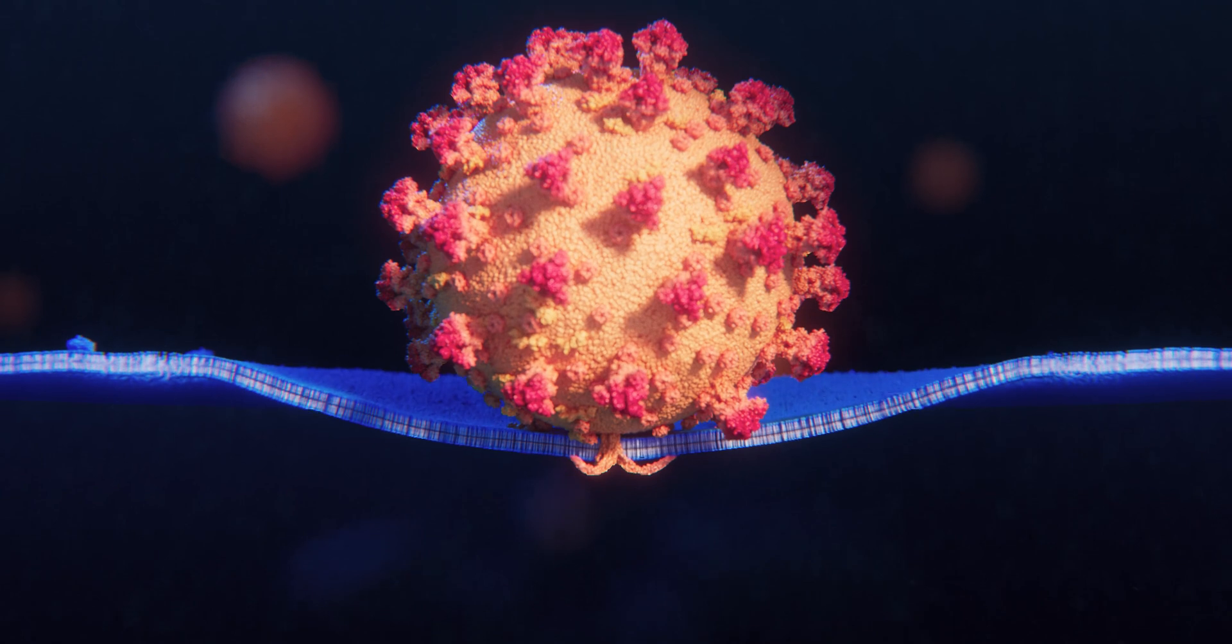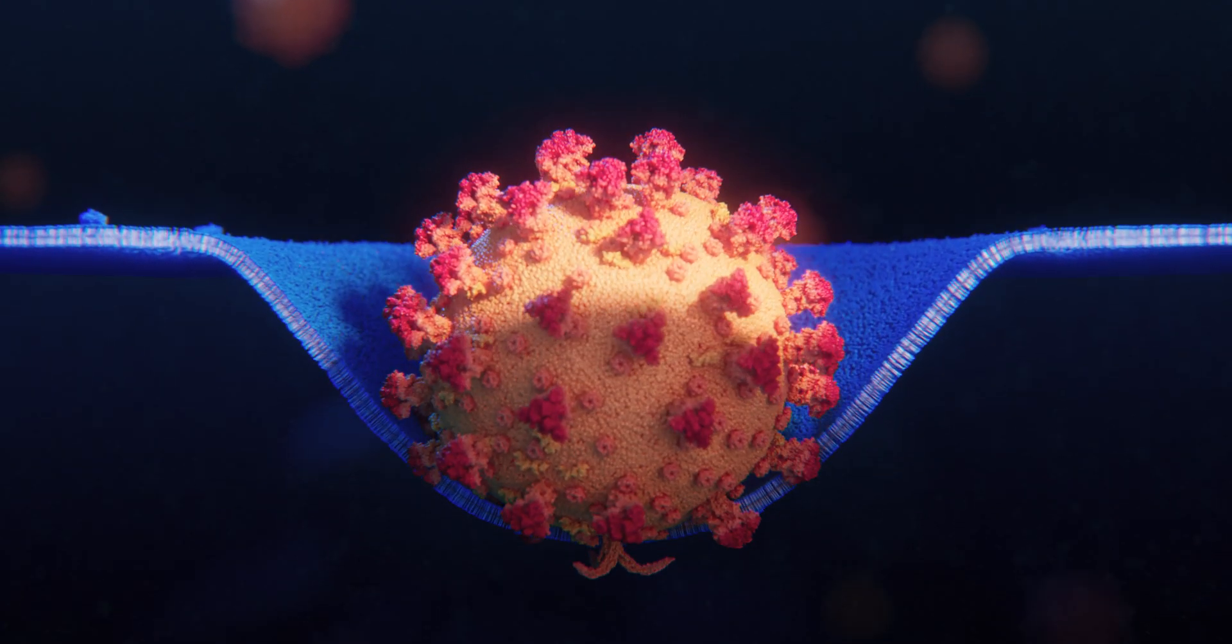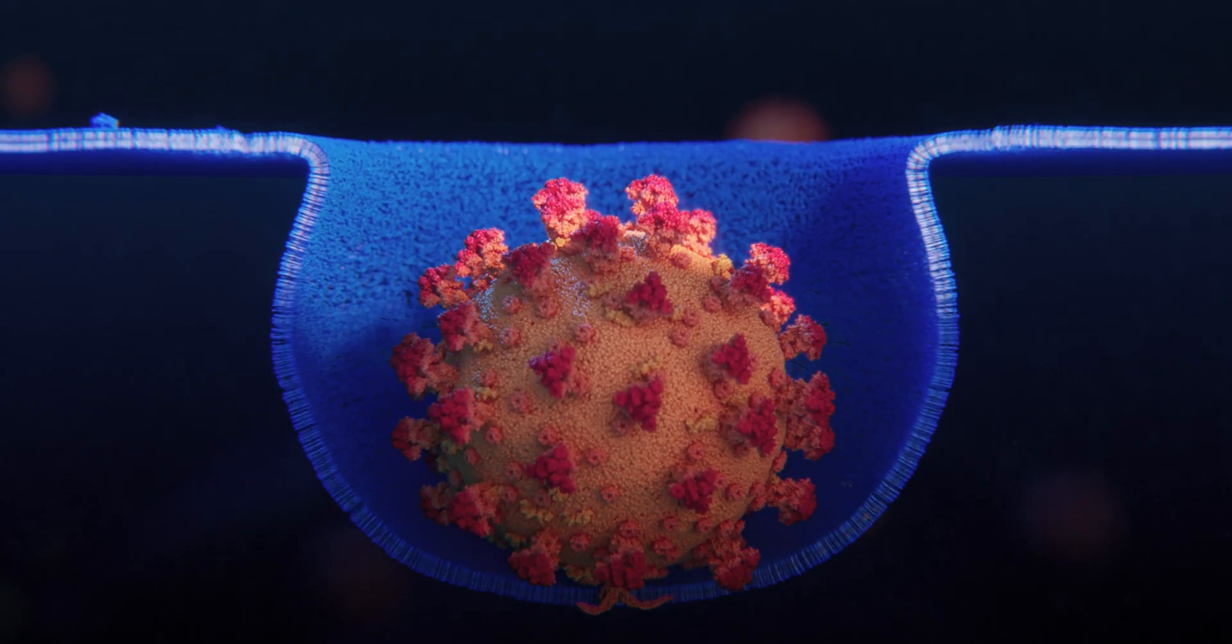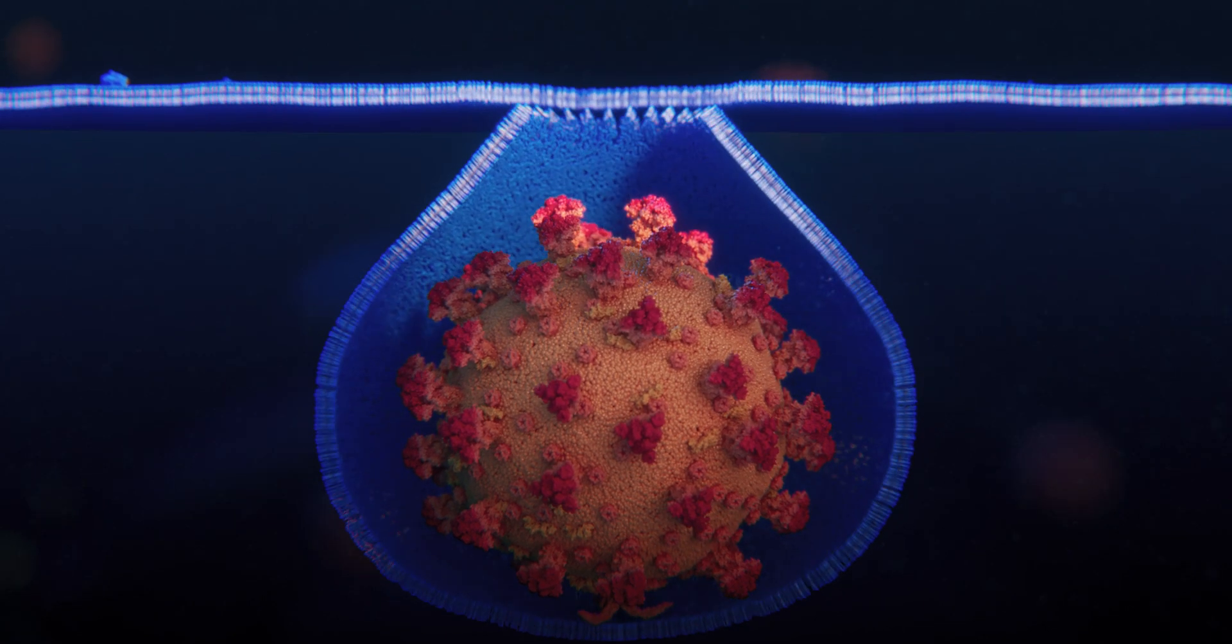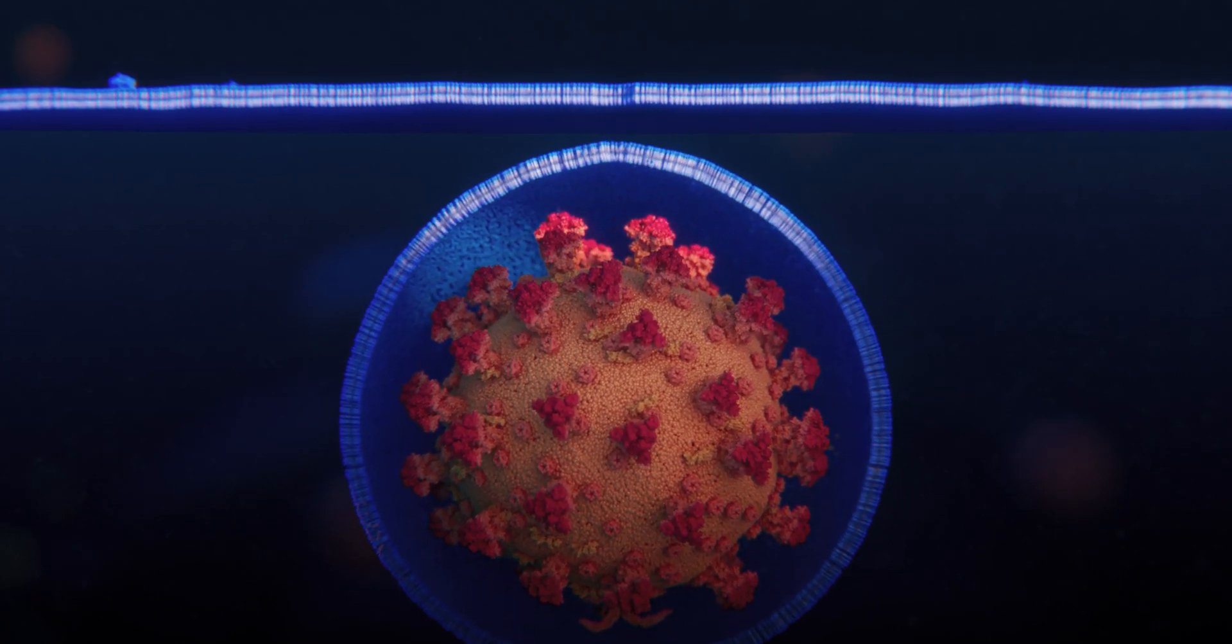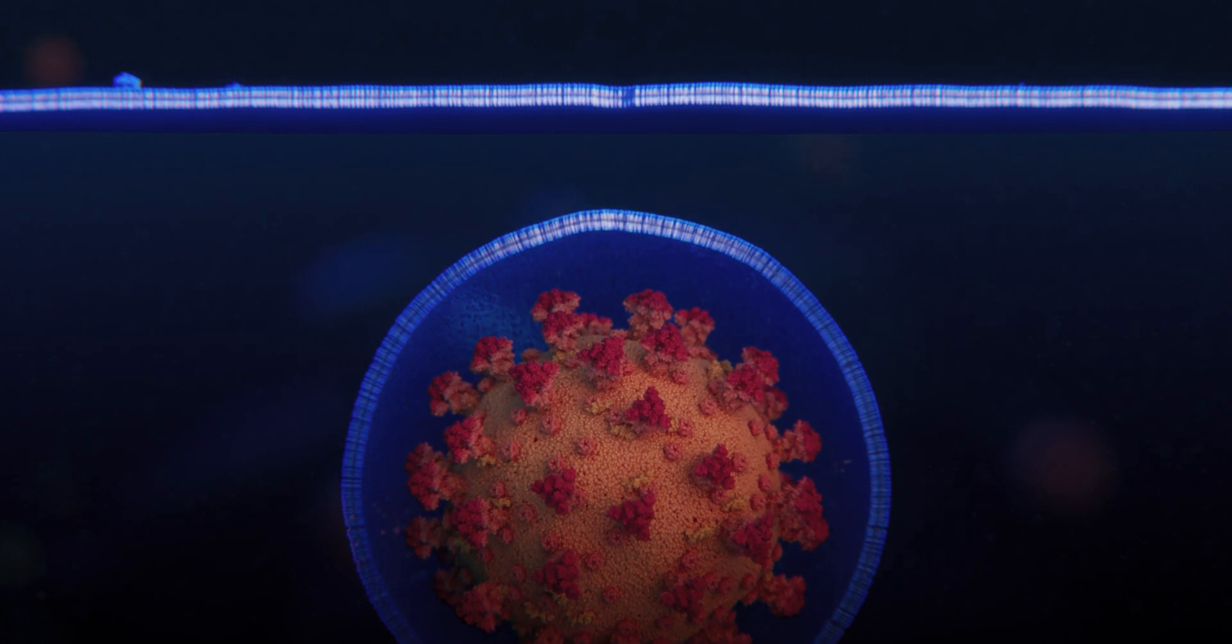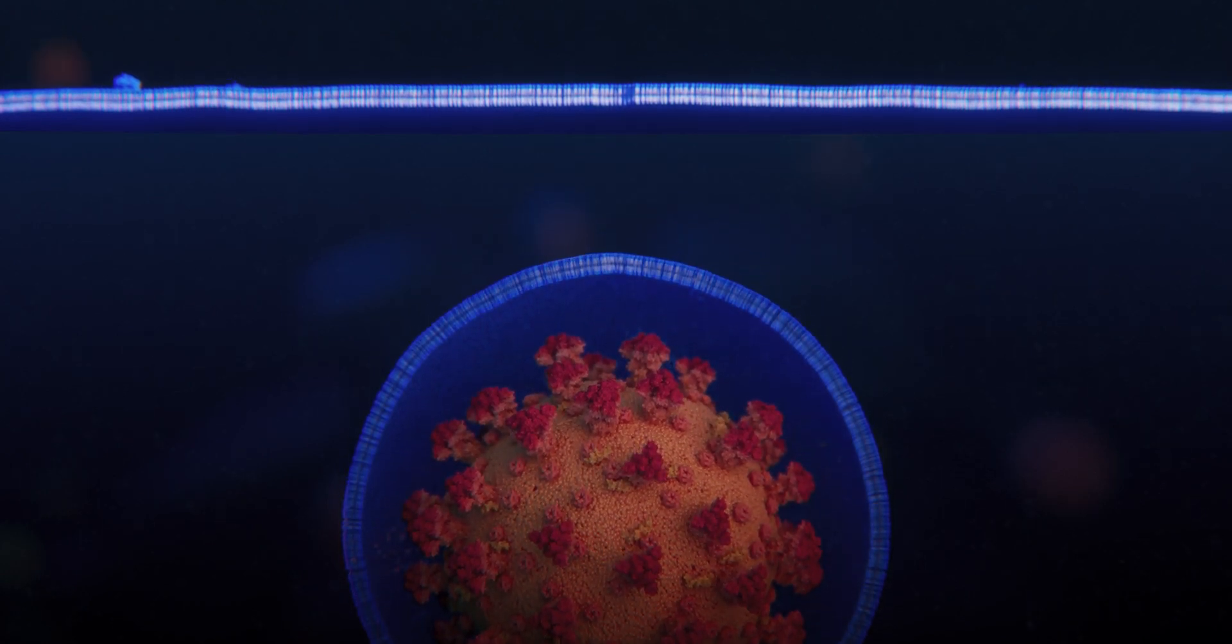At this point, the virus can enter the cell through a process of endocytosis. It engulfs the cell with its membrane. The virus has successfully invaded the cell and can now start to multiply, ready to overrun the system.